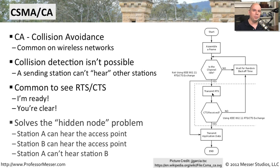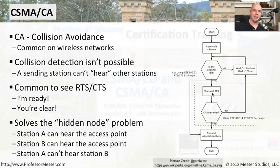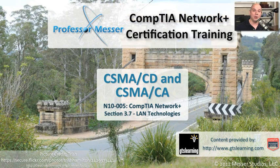This also solves a problem on wireless networks where you might be on one side of the network and can see the access point, but there may be another device on the other side that you can't hear — yet the access point can hear everybody. So the access point can tell station A or station B that they are clear to send, and neither station needs to be able to hear the other. That's the key benefit of CSMA collision avoidance: ensuring everybody can communicate without signals overlapping.